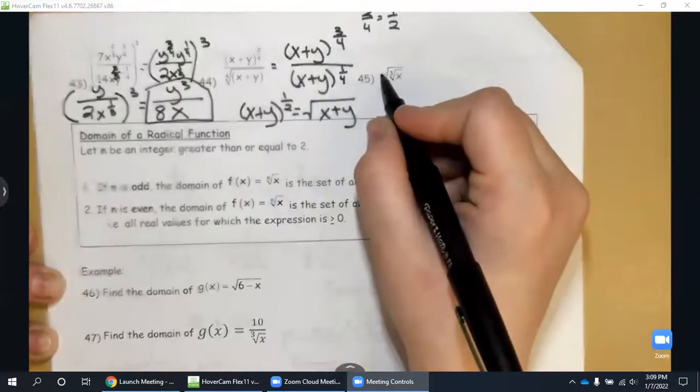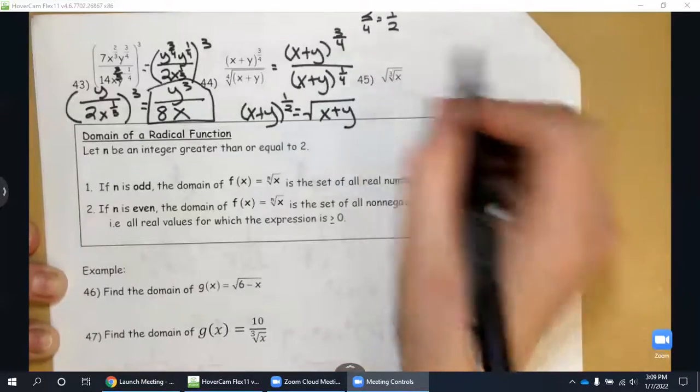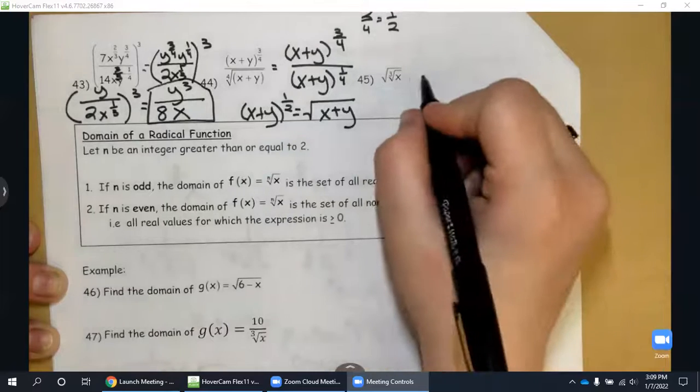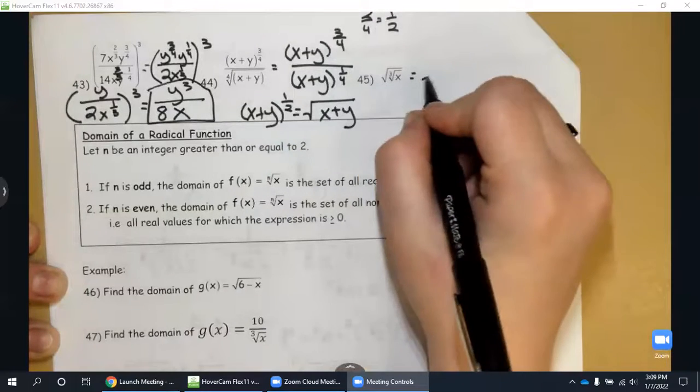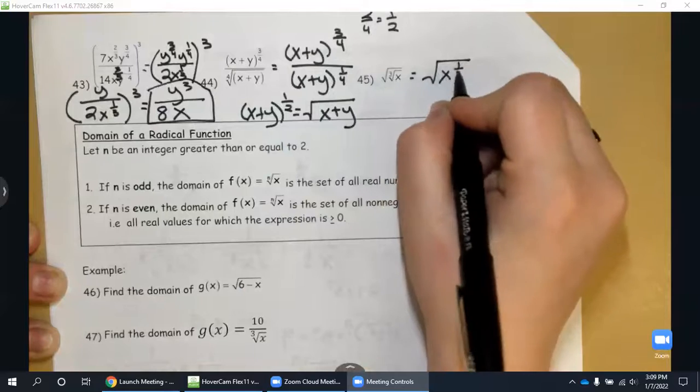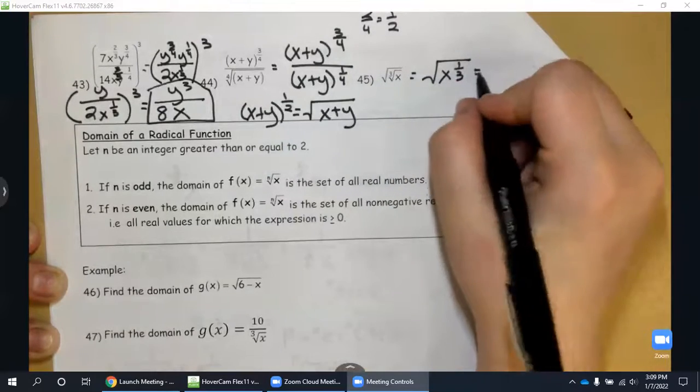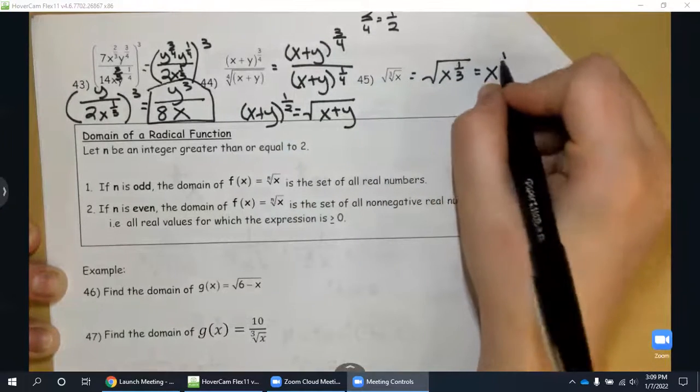45, last one. I'm looking at the square root of the cubed root of x. So let's rewrite this. Let's start from the inside out, putting this in exponential form. So that's the square root of x to the one-third. And then again, I'm going to put this in exponential form. So that's going to be to the one-third raised to the one-half power.